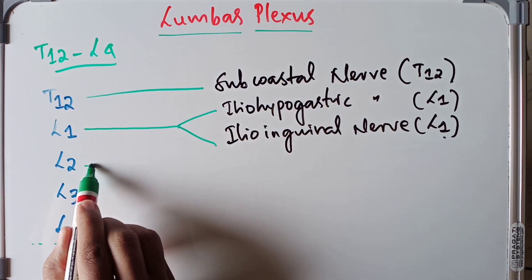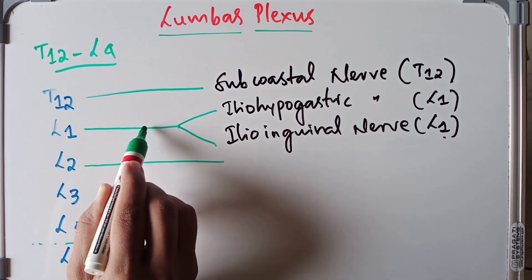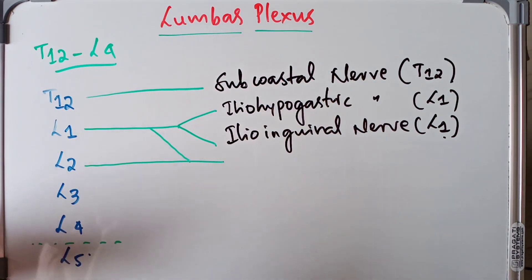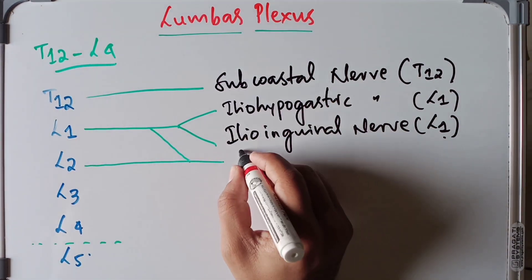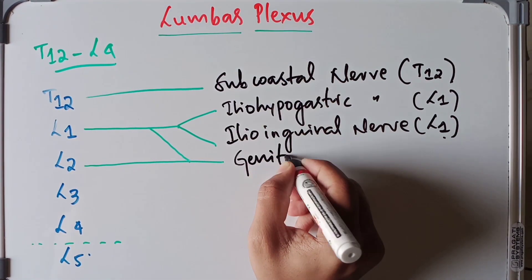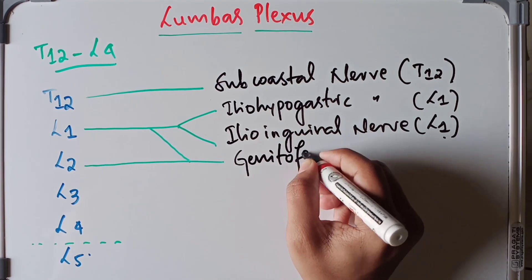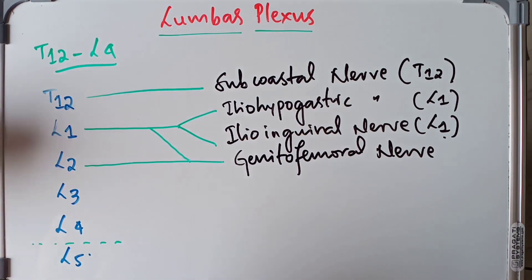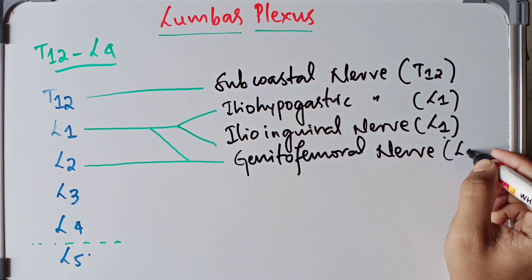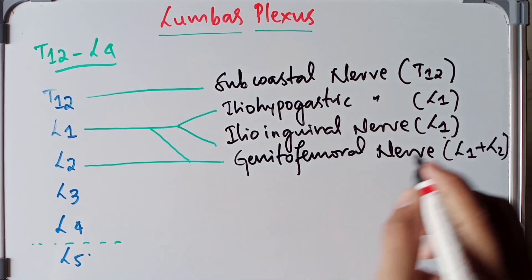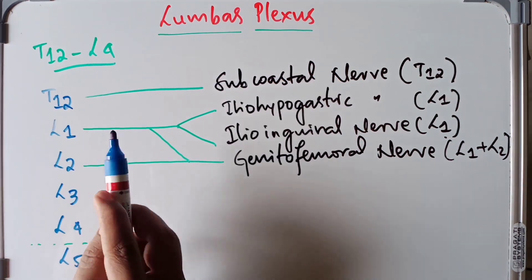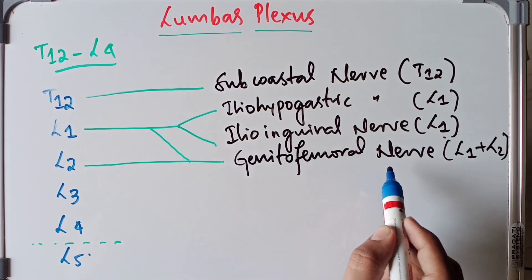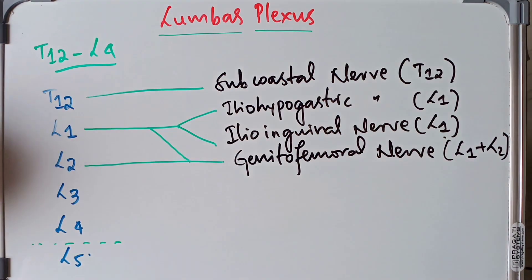The L1 spinal segment combines with the L2 spinal segment to give rise to the genitofemoral nerve. So the genitofemoral nerve derives its branch from both the L1 and the L2 segments.